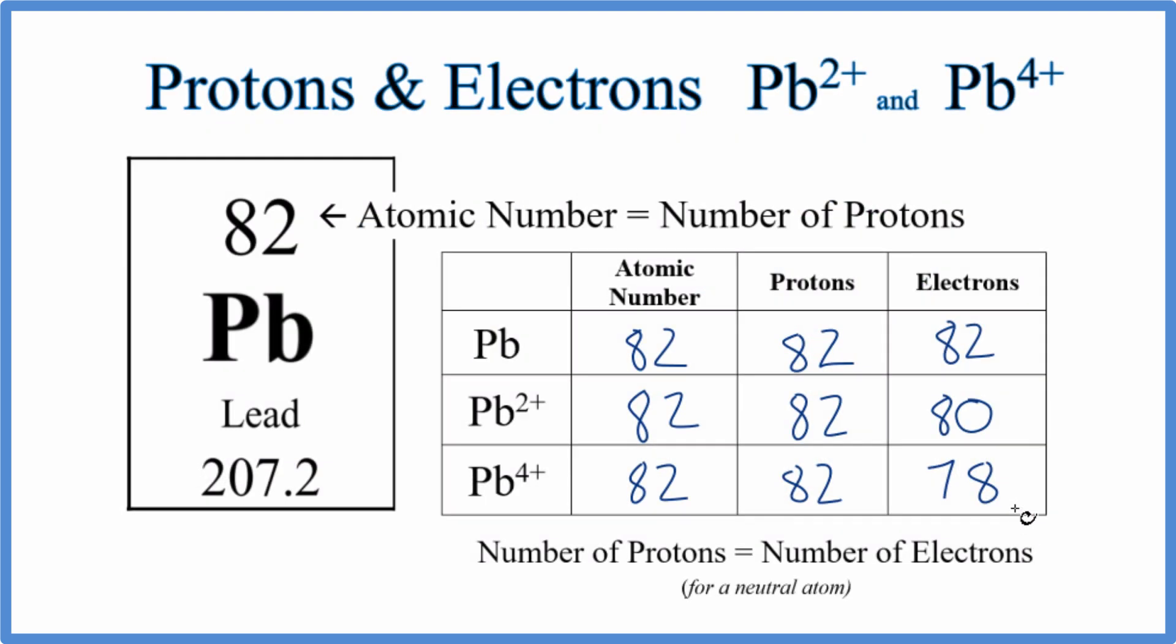If you need help finding the number of neutrons and the mass number for lead, there's a link in the description to help you do that. This is Dr. B with the number of protons and electrons for Pb²⁺ and Pb⁴⁺. Thanks for watching.